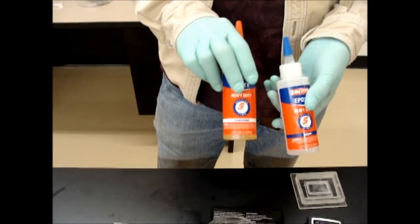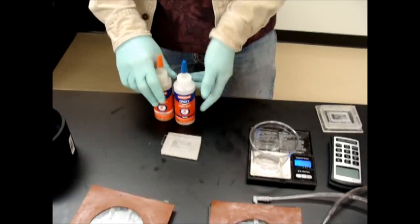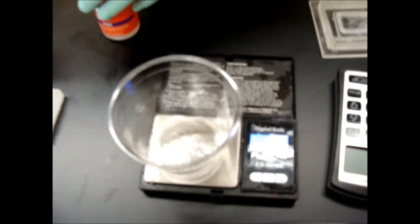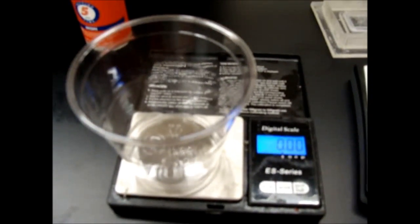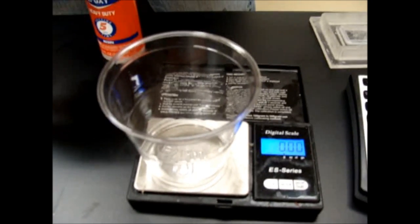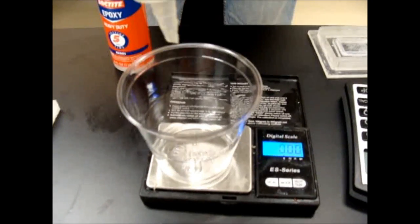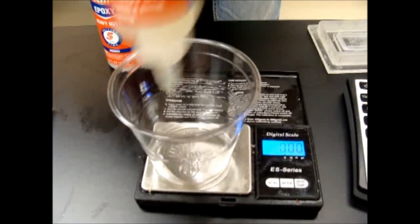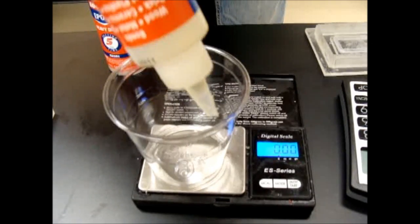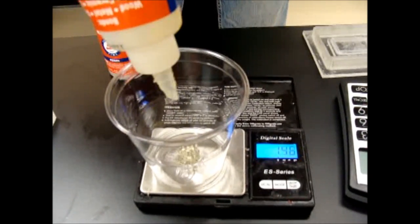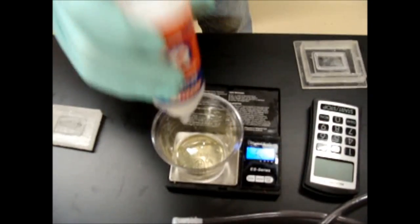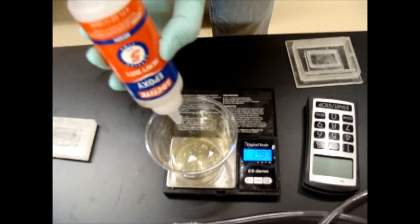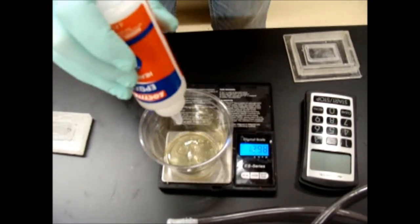You mix equal parts A and B. I'm going to set this to zero, and then mix up about 20 to 25 grams, enough to fill our mold. If I do 25 grams, I'm going to want about 12 and a half grams of each of the components. The mix is not super critical.